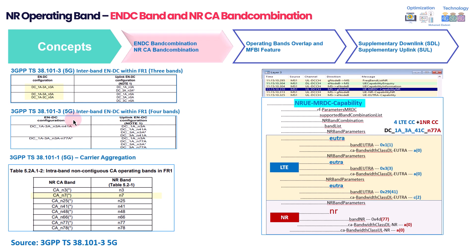For the four-carrier example, you have 1A and 3A — two carriers for 4G — then N3 and N41, which means two carriers for NR, giving four total. The notation rule: if there is no 'N' prefix it is 4G; if separated by a dash it is within NR; if separated by an underscore it is between 4G and 5G. This is how you read band combinations from 3GPP documents.